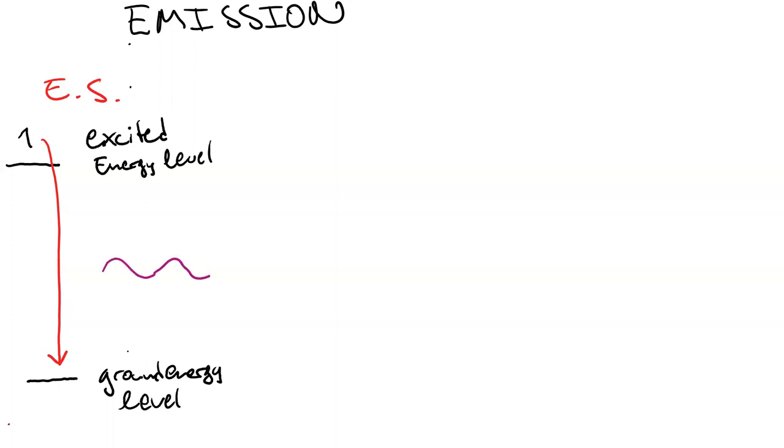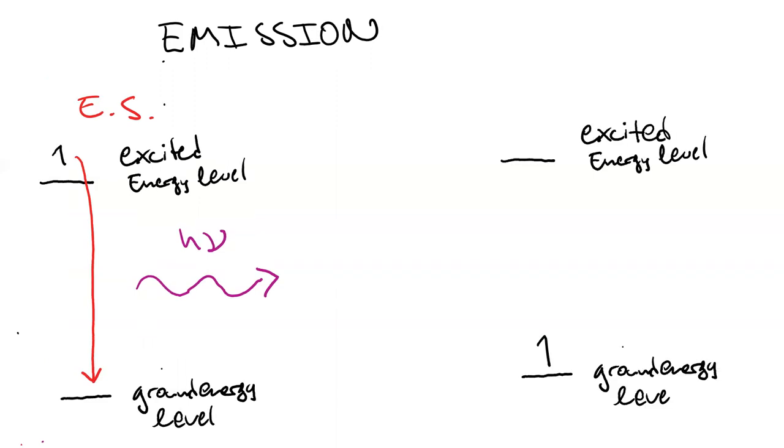One way for it to get rid of the energy is to emit a photon, H nu. So this leads us back to having the electron in the ground energy level, or the ground state.